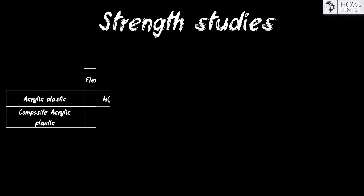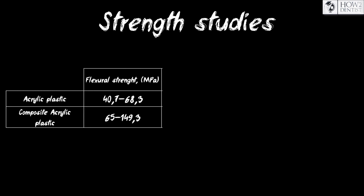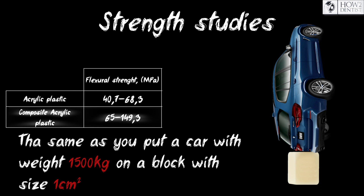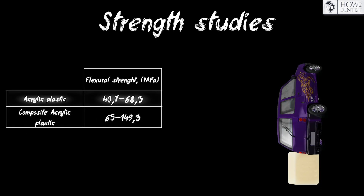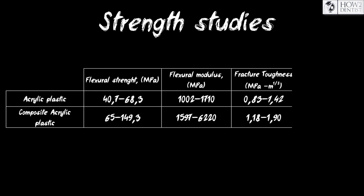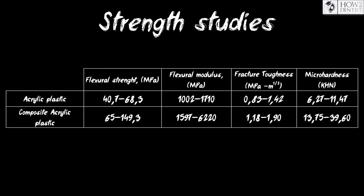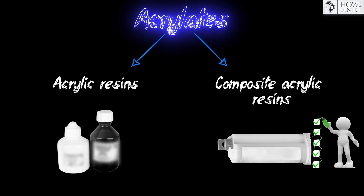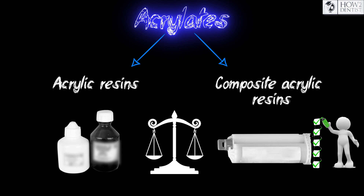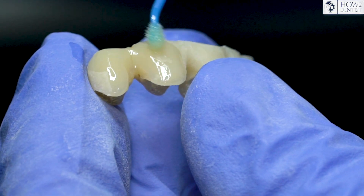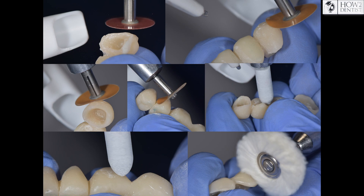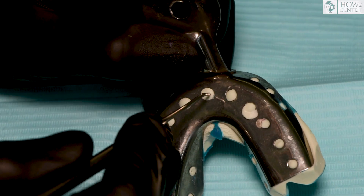Studies have shown that composite materials can withstand a load of up to 149.3 MPa at fracture, while acrylic plastics withstand only 68.3 MPa under the same conditions. Composites also show the best indicators of hardness and resistance to abrasion in various environments. Despite the advantages of composite materials over acrylics, they have a number of features to consider when working, which we will discuss in the next episodes on the practical aspects of working with plastics.